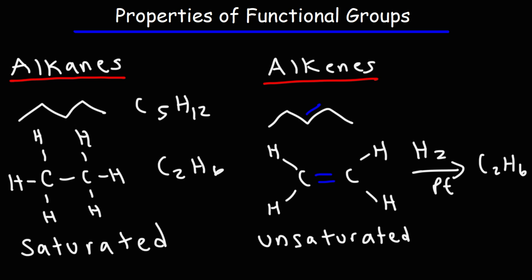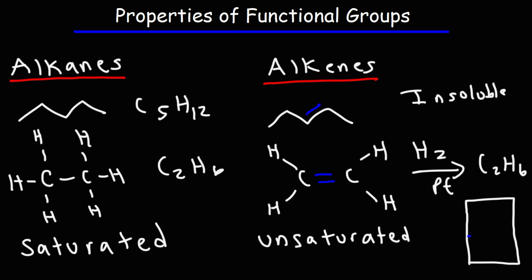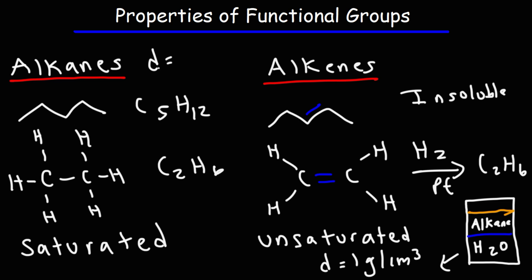Both alkanes and alkenes are insoluble in water — they don't dissolve in water. If you put an alkane with water, you'll have two layers. Water has a higher density than most hydrocarbons, so the alkane will be on top and water will be underneath. Hydrocarbons like alkanes, alkenes, and alkynes don't mix with water. They have a lower density than water — water has a density of 1 g/cm³, while a typical alkane has a density of around 0.6 to 0.7 g/cm³. That's why they float on water.